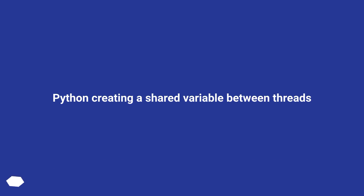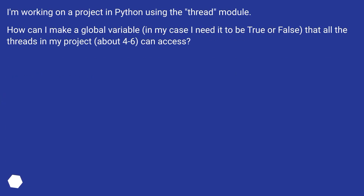Python: creating a shared variable between threads. I'm working on a project in Python using the thread module. How can I make a global variable — in my case it needs to be true or false — that all the threads in my project, about 4 to 6, can access?